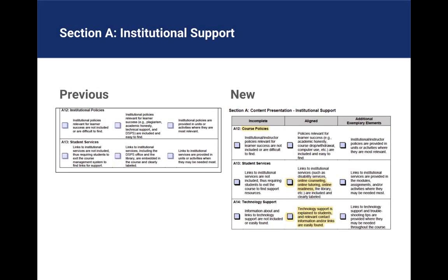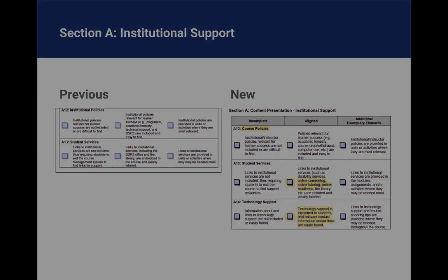These criteria on institutional support were grouped together, and examples of student services were changed to include tutoring, counseling, and online readiness. Also, technology support was broadened beyond the instructor role.